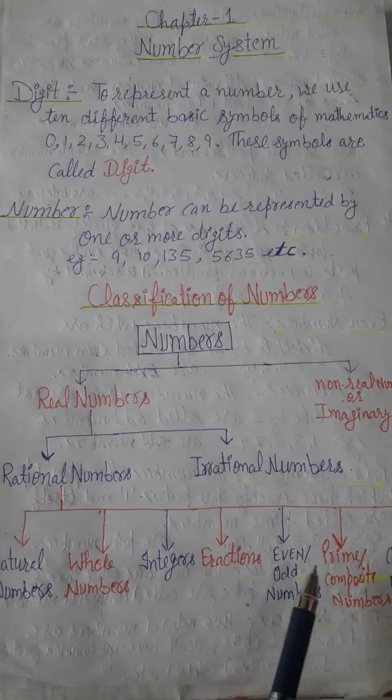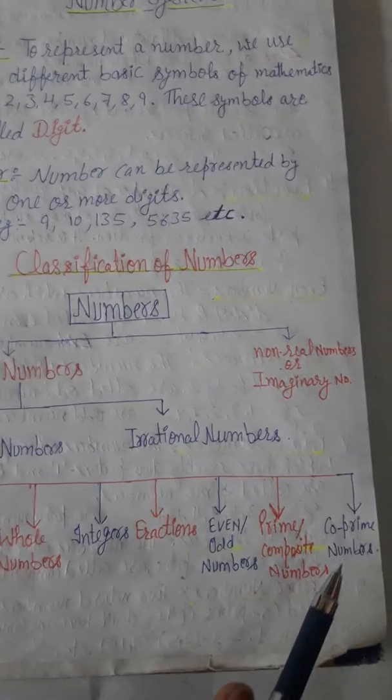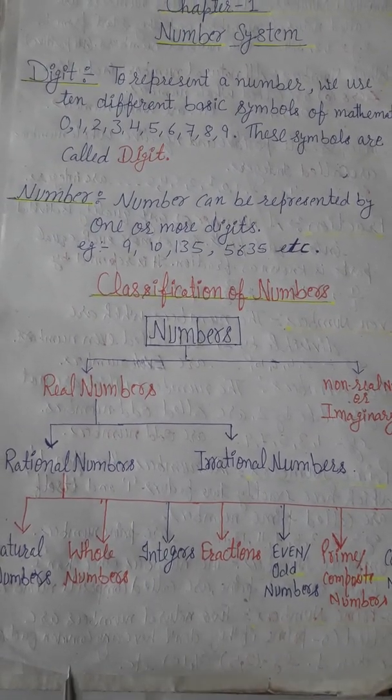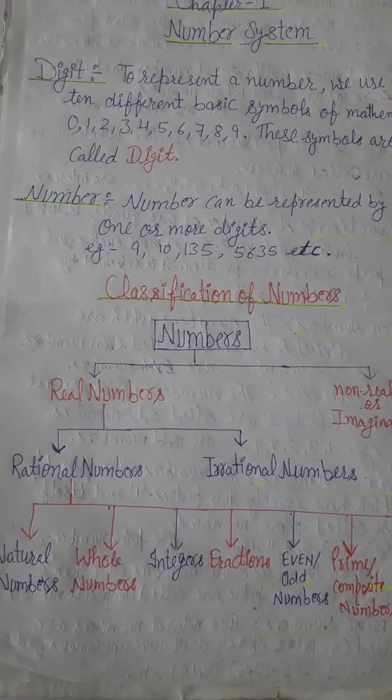...odd numbers, prime numbers, composite numbers, and lastly co-prime numbers. First we will discuss all these numbers, then we can start our topic, the number system.